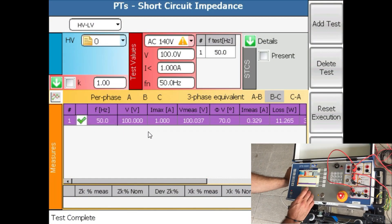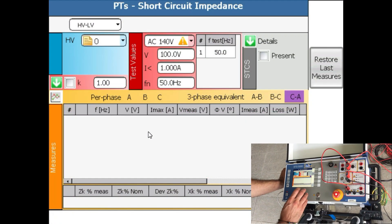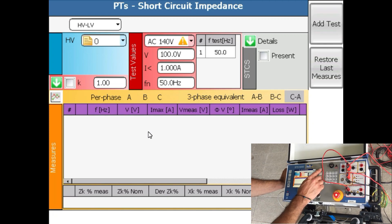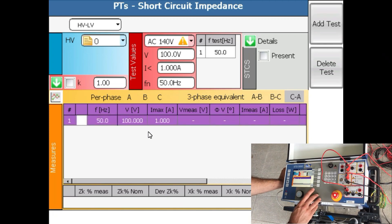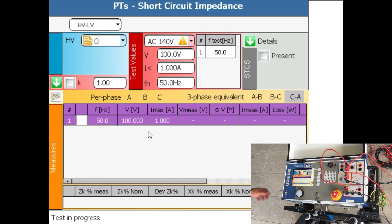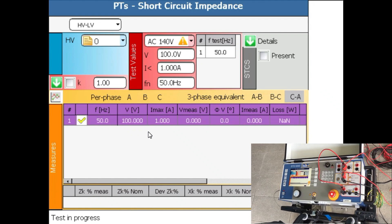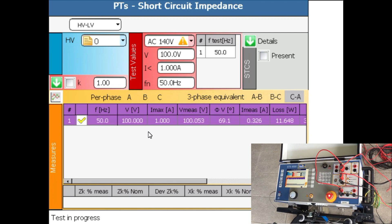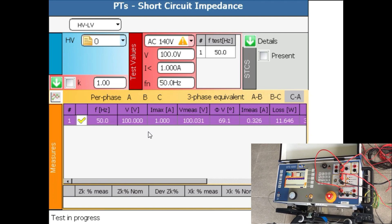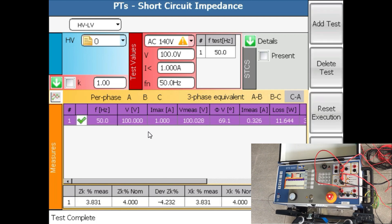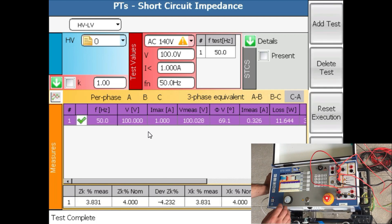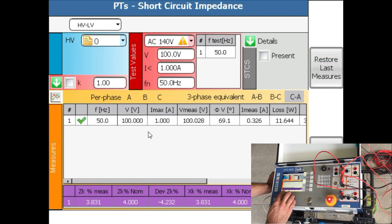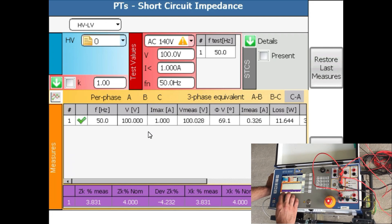The third test is the test CA. We highlight this line, press add test and press the start button. We can see that the current is again 0.326 and right now here below we can see the results we have obtained.